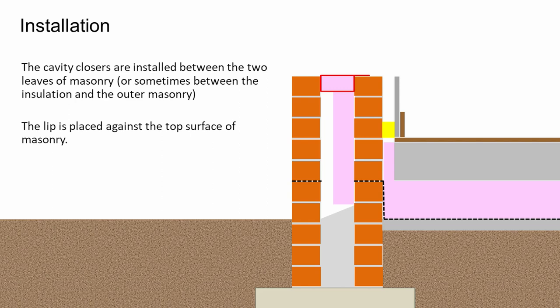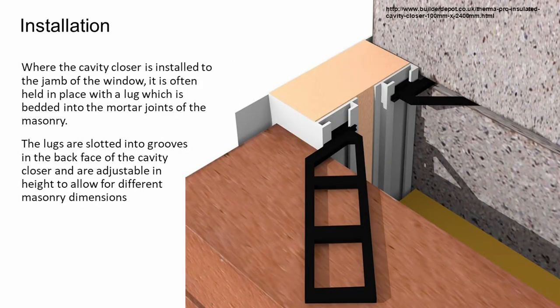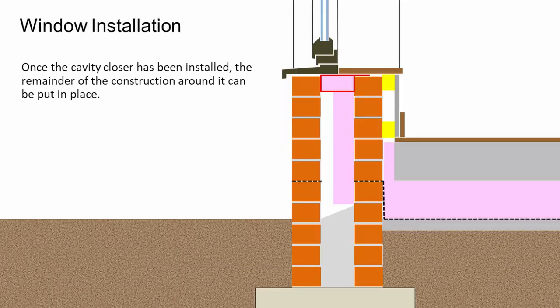Most cavity closers have a lip or an edge that can be placed against the top surface of the masonry. In this example where we're creating a window into this wall, we can see the red line sitting on top of the inner brickwork. Where a cavity closer is installed to the jamb of a window, it's often held in place with a holding lug or bracket. That lug is placed into a groove in the back of the cavity closer — it's adjustable in height — and we would embed that into the mortar.